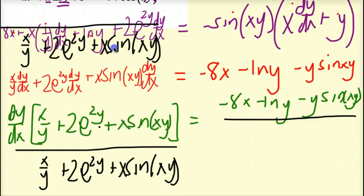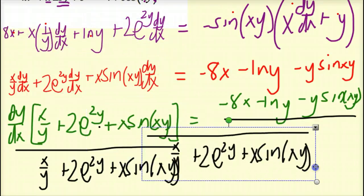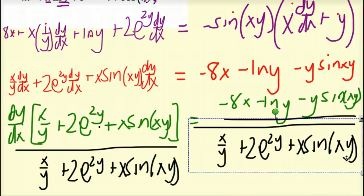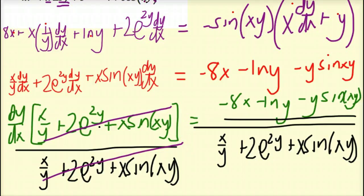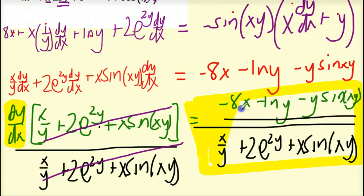To get dy/dx by itself, I divide by the whole bracket. So dy/dx equals negative 8x minus ln of y minus y sine of xy, all over x over y plus 2e to the 2y plus x sine of xy. So what you've actually done in this lesson is review u substitution, learn how to take derivatives and integrals of e's and ln's, and practice implicit differentiation — all of which helps review for the AP exam. Good luck, and let's try a couple of these problems in class when you return. Goodbye.